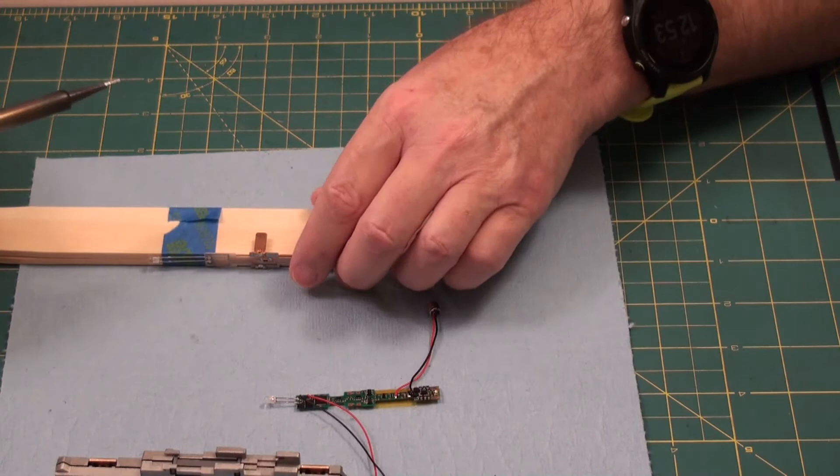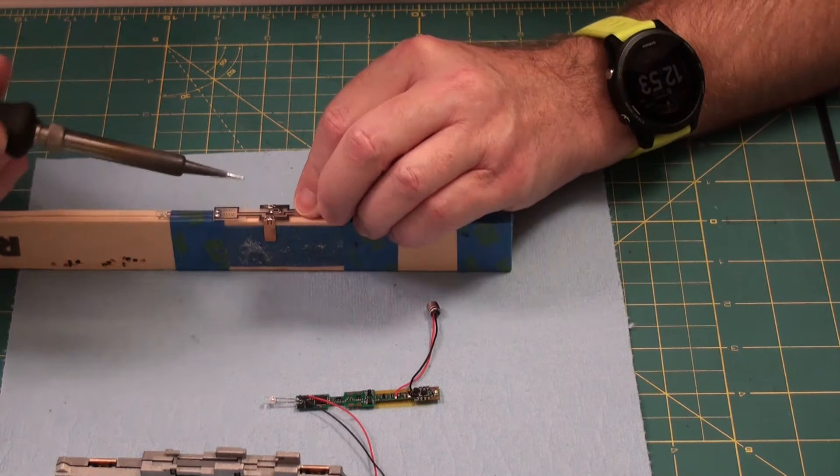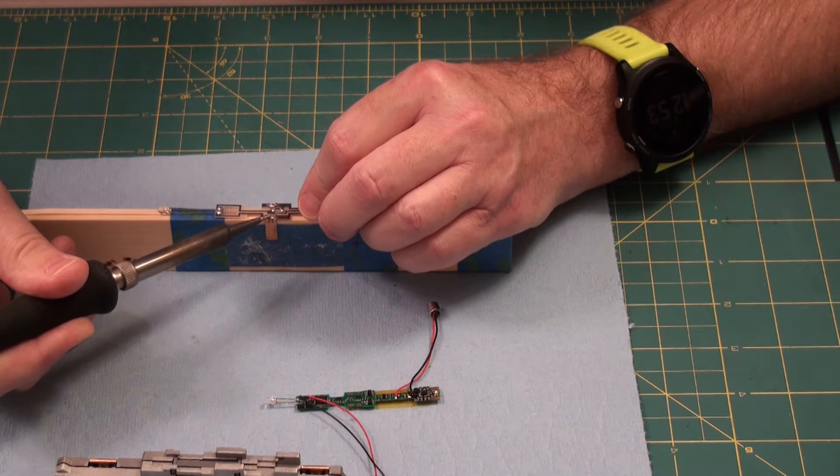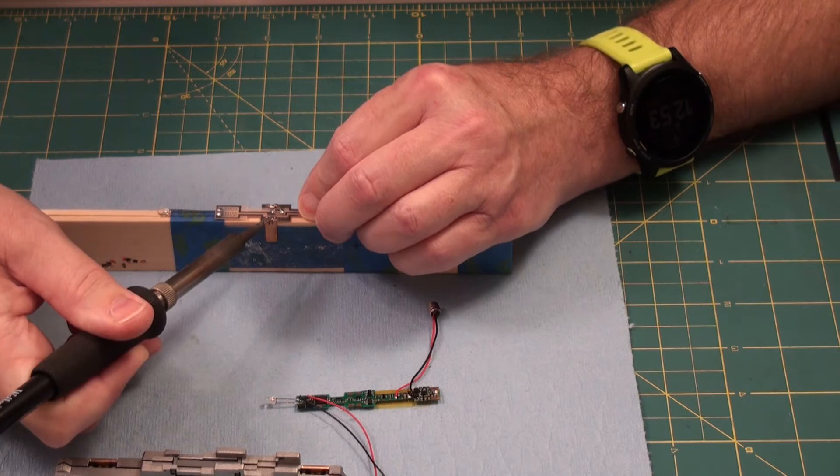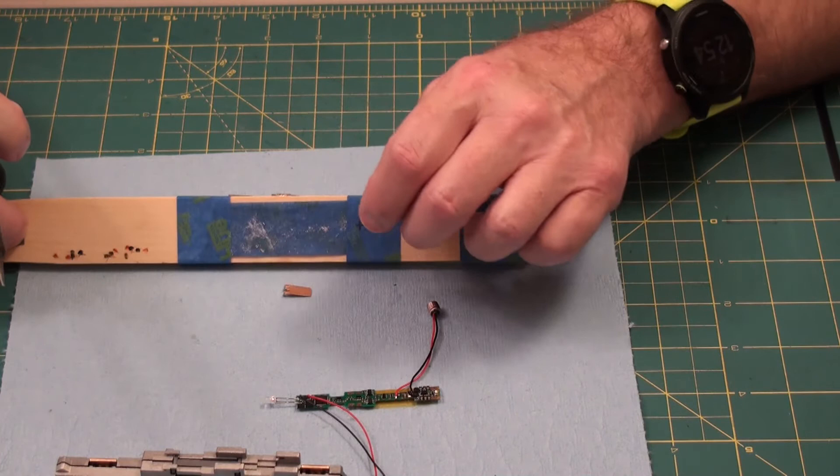And so for this, all we're going to do is heat this area where there's solder. Let's see if that shows up better. Apply heat to the solder and as it melts, pull it off. And there you have the little contact. It'll be hot.